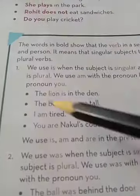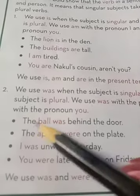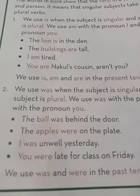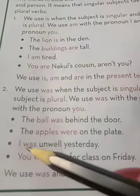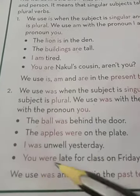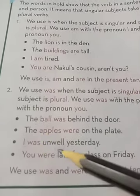The ball was behind the door. The apples were on the plate. I was unwell yesterday. You were late for the class on Friday. We use 'was' and 'were' in the past tense. Keep in mind: for 'you,' we use 'were,' and for 'I,' we use 'was.'